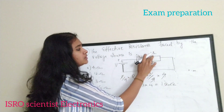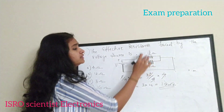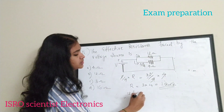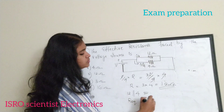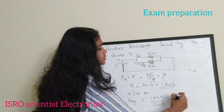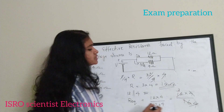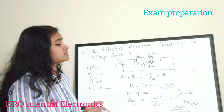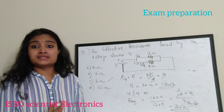Now R = 12 ohm is connected in parallel with the 4 ohm resistor. The equivalent resistance is R_eq = (12 × 4) / (12 + 4) = 48 / 16 = 3 ohm. So the equivalent resistance faced by the voltage source is 3 ohm, and the correct answer is option C.